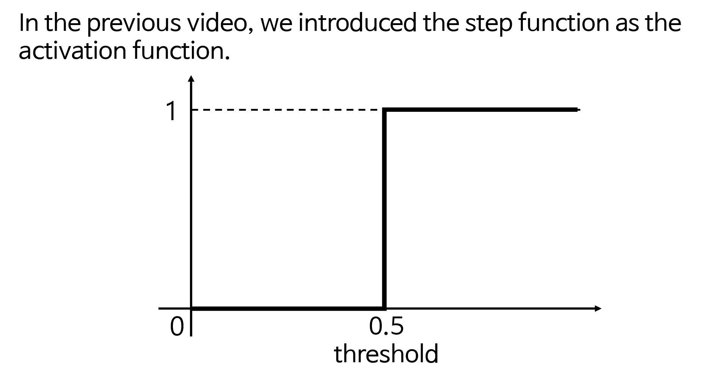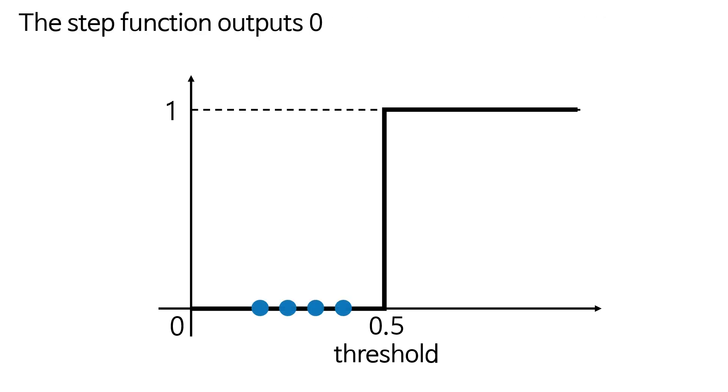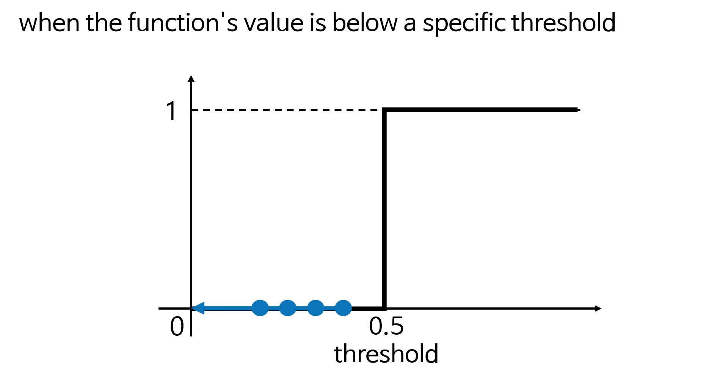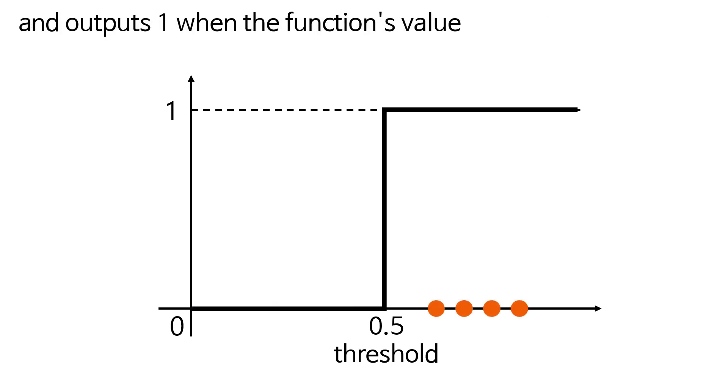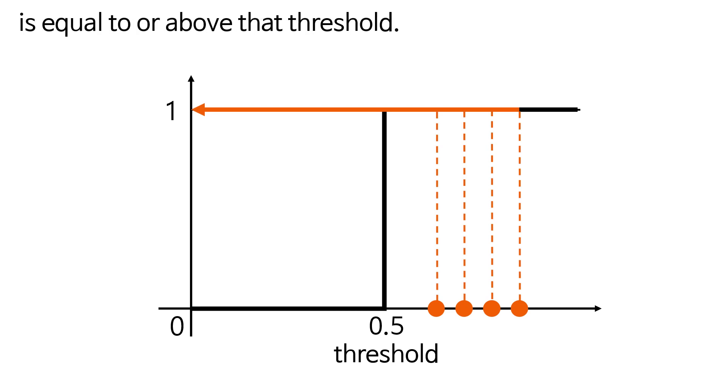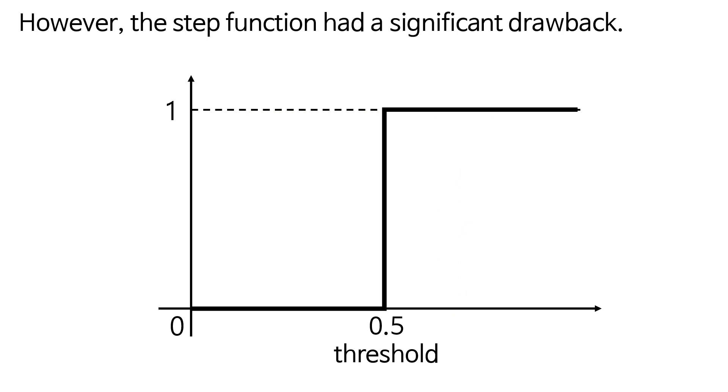In the previous video, we introduced the step function as the activation function. The step function outputs zero when the function's value is below a specific threshold and outputs one when the function's value is equal to or above that threshold. This step function is non-linear, however the step function had a significant drawback.